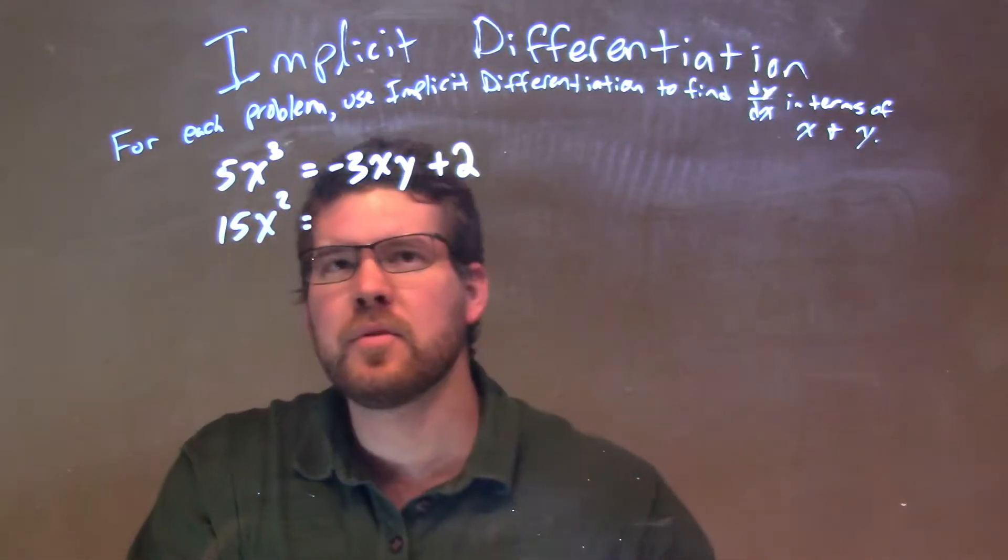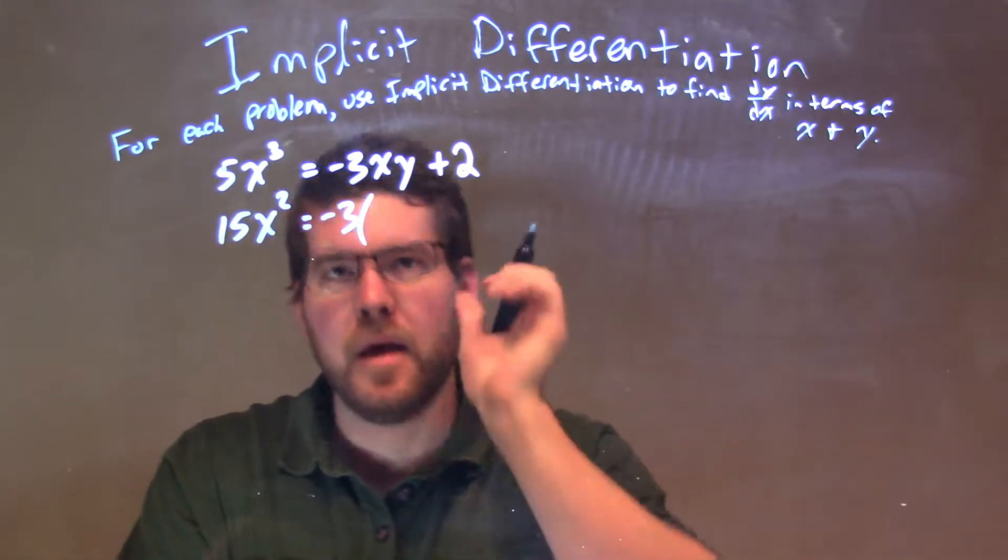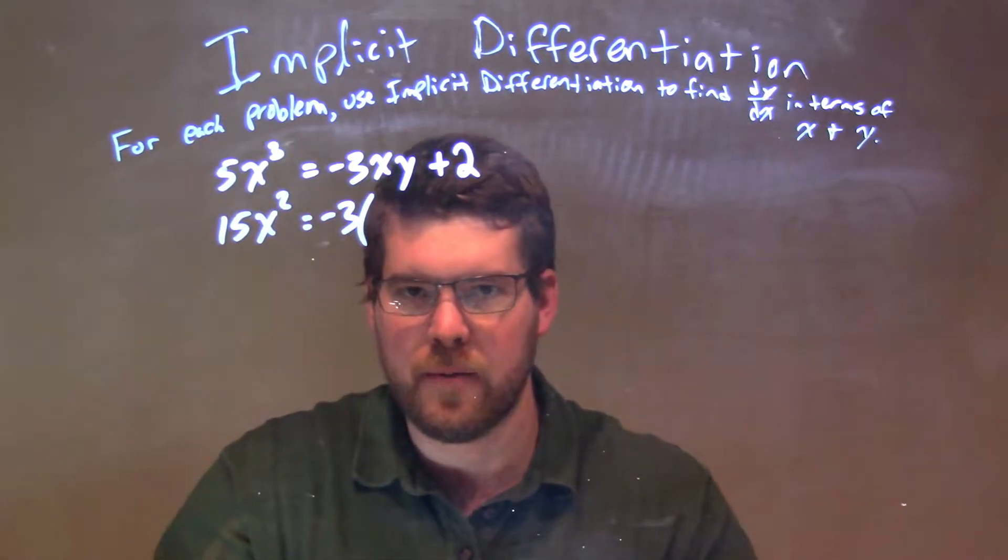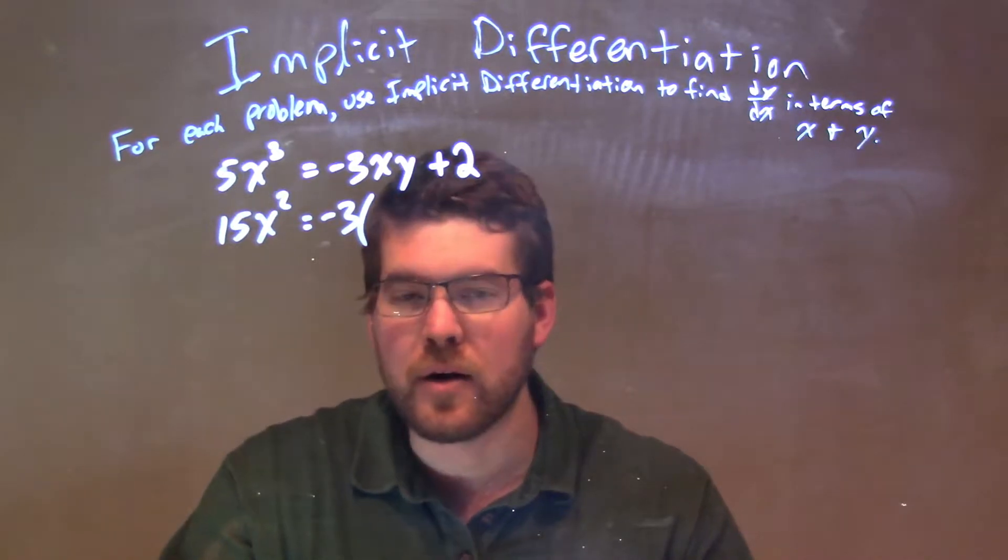Is equal to, now, this one's a little tricky, so what I'm going to do is I'm going to actually leave the negative 3 out front, and I have x times y. So, what I actually have to do here is apply the product rule.